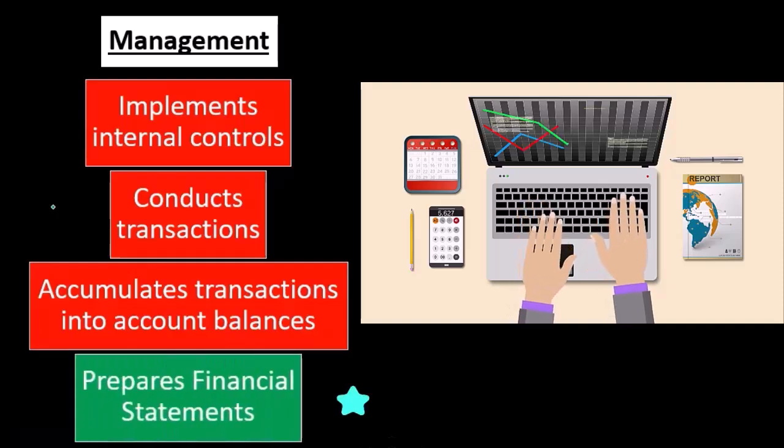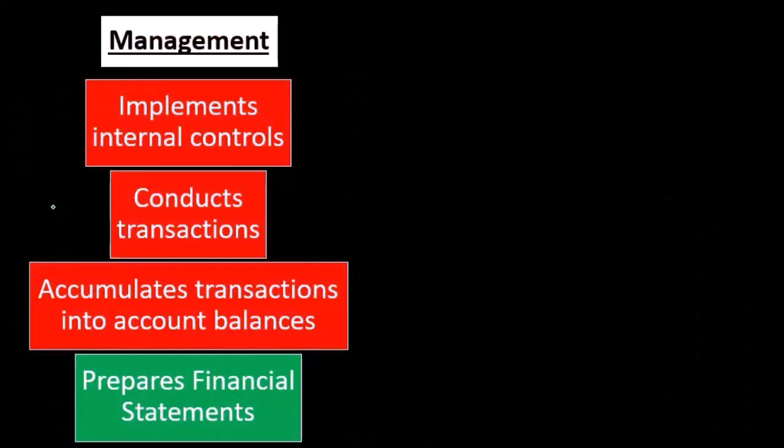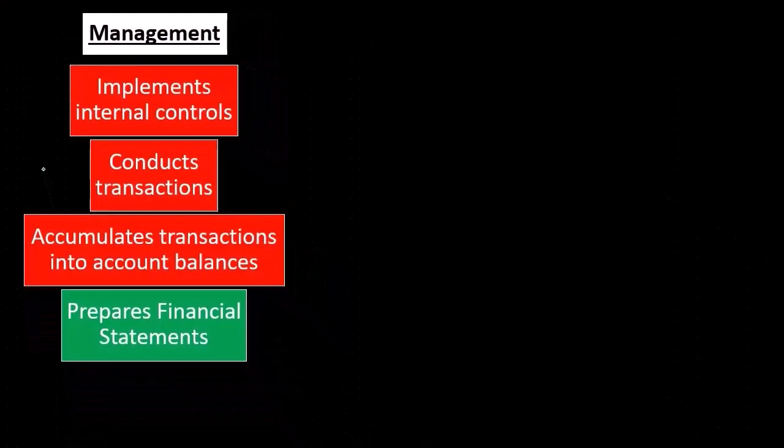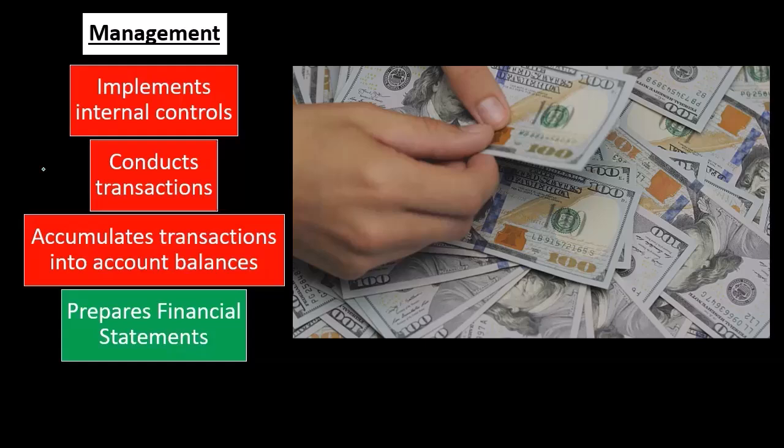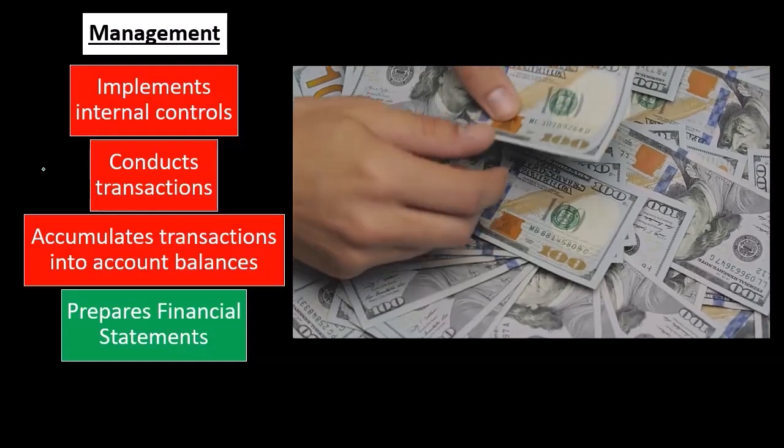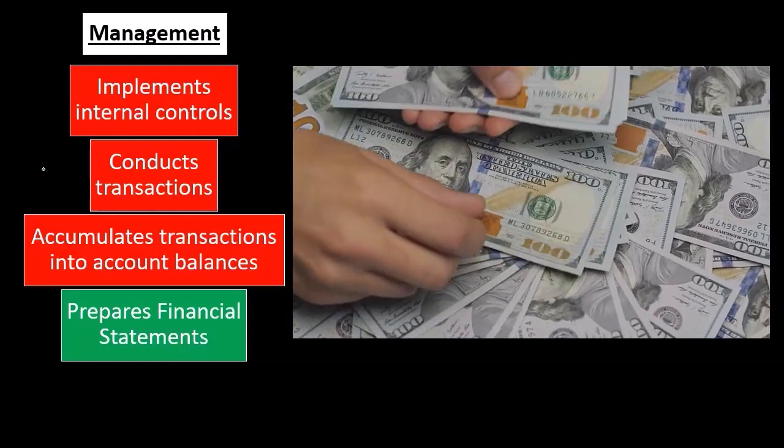Then they're going to take that information and prepare financial statements, which of course is the end result. If we're talking about a publicly traded company, they're required to have the financial statements put together. If they're not publicly traded, they want them for internal use and possibly to get a loan or something like that. So the end result, representing what has been done in terms of financial accounting according to Generally Accepted Accounting Principles, are the financial statements that are prepared.